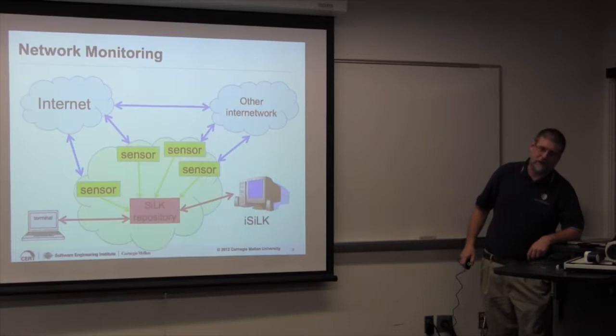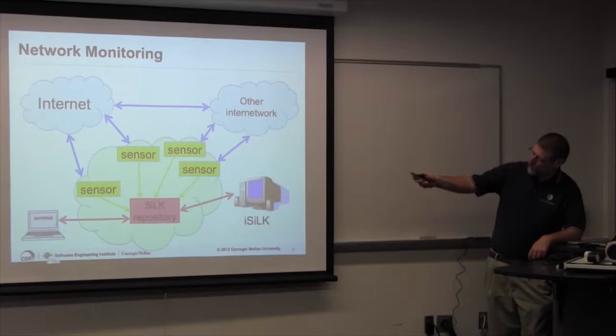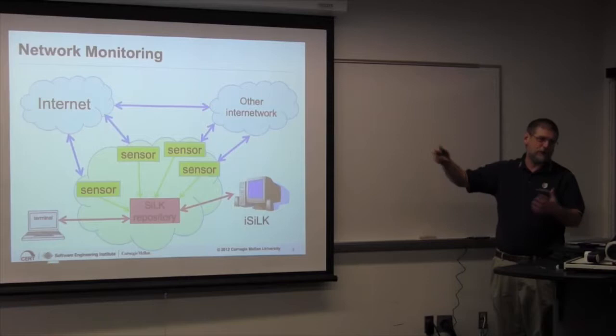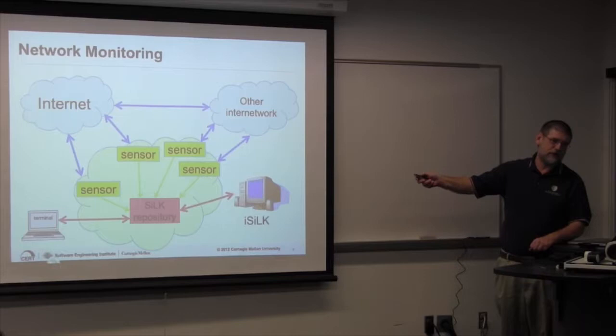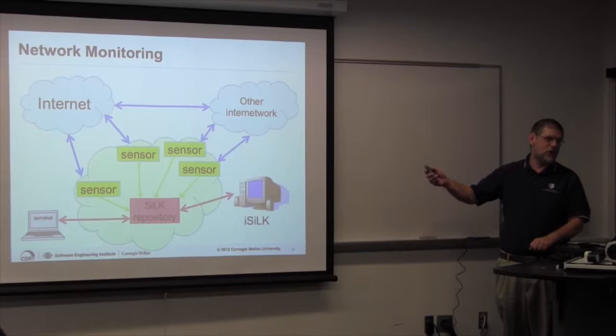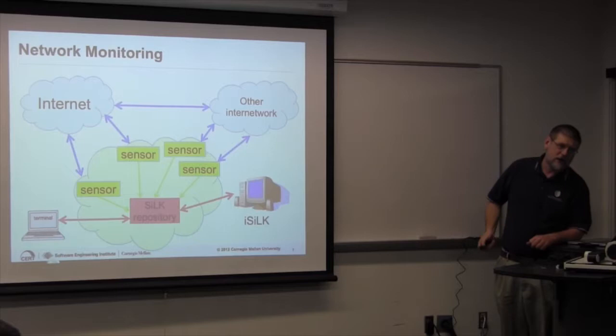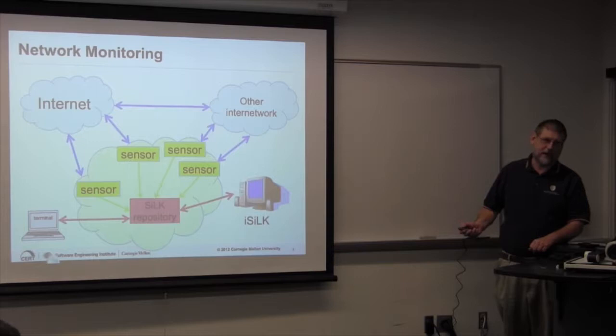One of the key questions is: where are those sensors placed? The classic place is on your uplink, if you have a small organization with one or two internet uplinks. Preferably inside the firewall or inside the screening router, so some of the noise is filtered out. You can go wild and put sensors on every switch inside your network for full internal visibility.